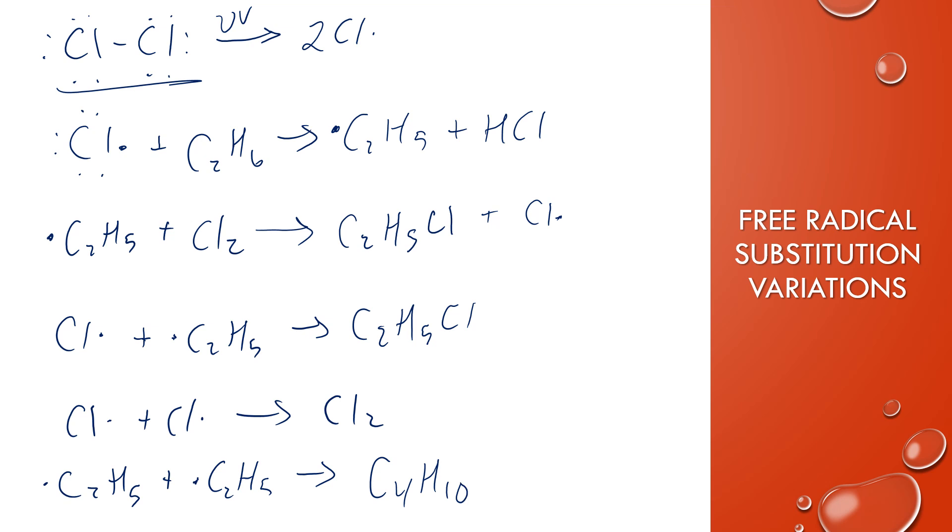So once you get the radicals formed with homolytic fission, then there are a lot of possible ways that propagation could happen or that termination could happen. So don't think that it's this one set thing that always happens this one way. There's lots of possibilities for each of these reactions.